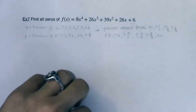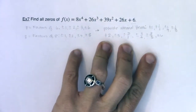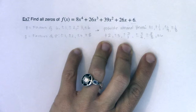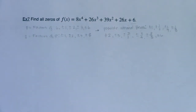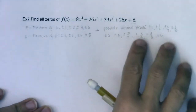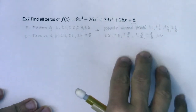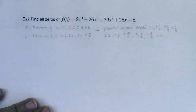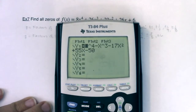So you potentially have 20 numbers that you could use synthetic division with, and hopefully a couple of those work. I think you can start to see that is not something I want to do — if I had to, I could; at least it's narrowed down to 20 numbers. But I'm going to use technology. So let's go ahead, get our calculator up to speed, and plug this function in.